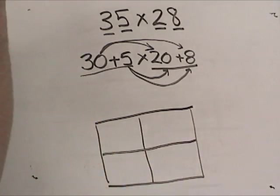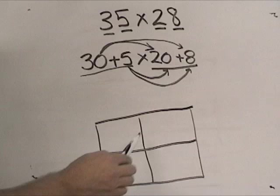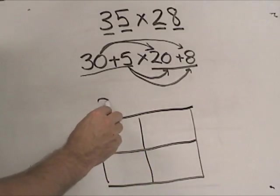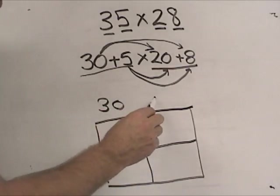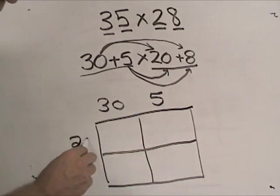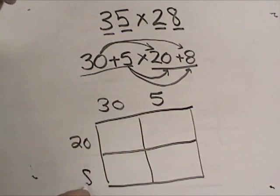And what they'll do, just to keep track of making sure that they do multiply all these parts, is they will put a 30 up here, and they will put a 5 up here, and then they'll put a 20 over here, and then put an 8 over here.